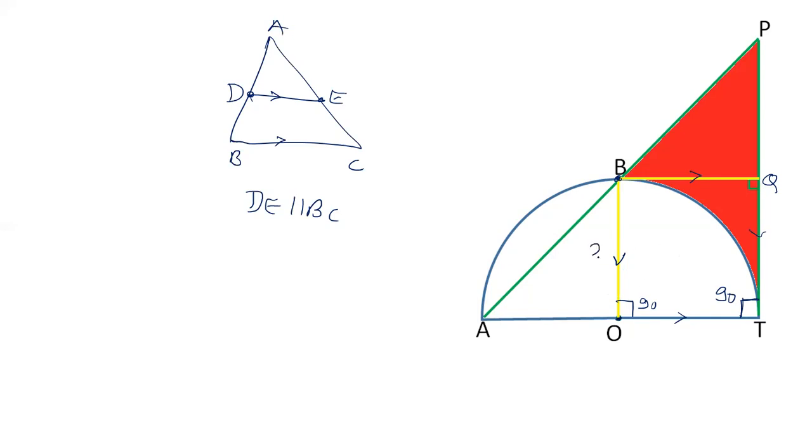Now, this OB is a radius, so it is 2 cm. OT is radius 2 cm. This is 90 degree angle. Angle OBQ is 90 degrees. OBQT is a rectangle. In fact, it is a square. All the angles are 90 degrees and adjacent sides are equal. So, this becomes a square. So, we have proved that OBQT is a square.